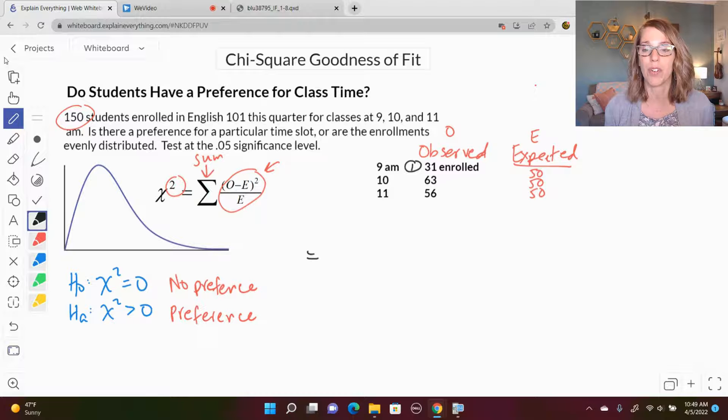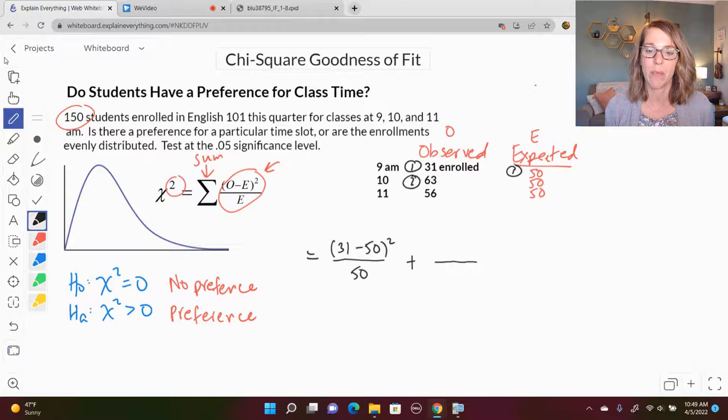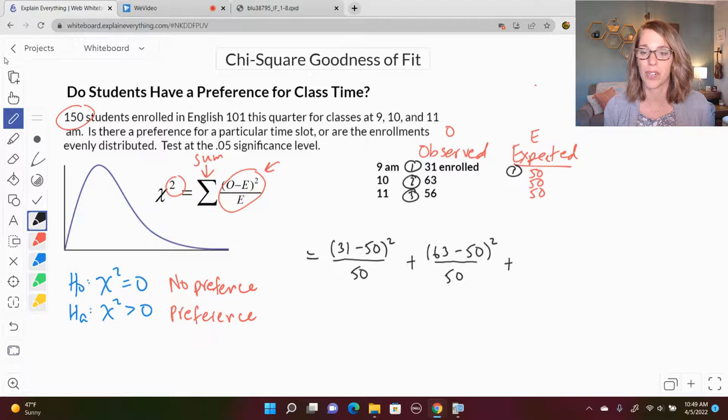That's going to be 31 as the observed and 50 as the expected. So for this first fraction, I'm going to go observed, which is 31, minus expected, which is 50, squared, divided by expected, which is 50, plus. Now let's move on to data value number two. For data value number two, we're going to have observed, which is 63 this time, minus expected, which is 50, squared, divided by expected, which is the same each time here. And then finally, my last observed value, three is going to have a fraction as well. So 56 minus 50, squared, divided by 50.